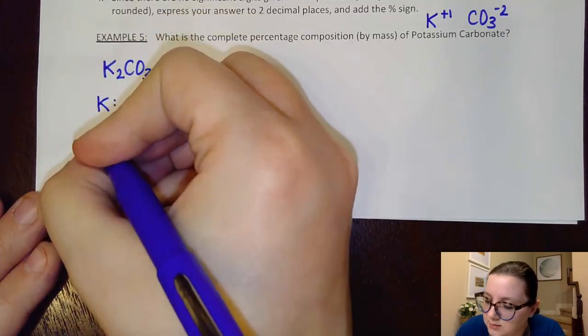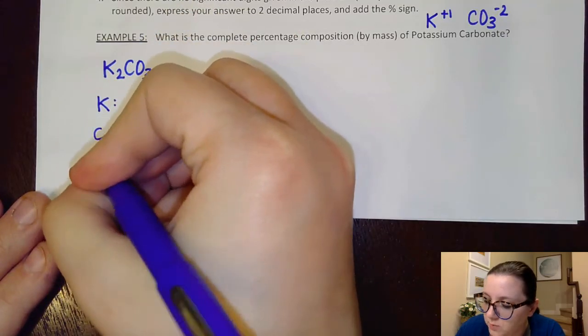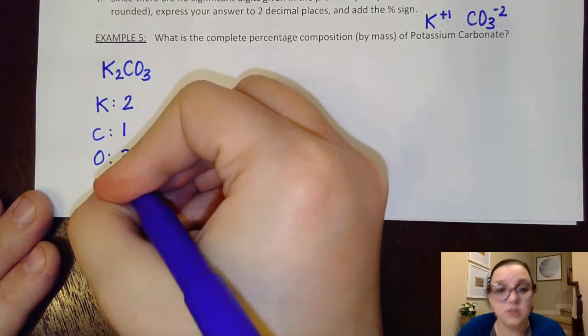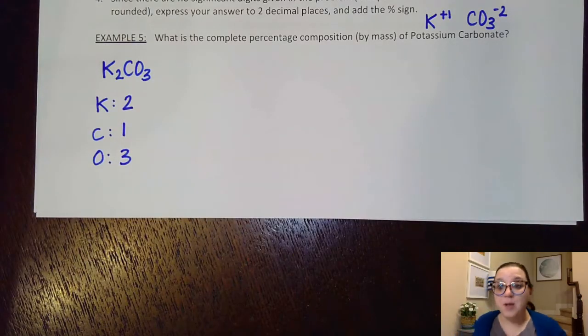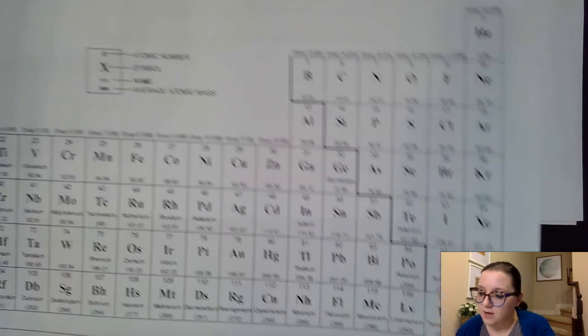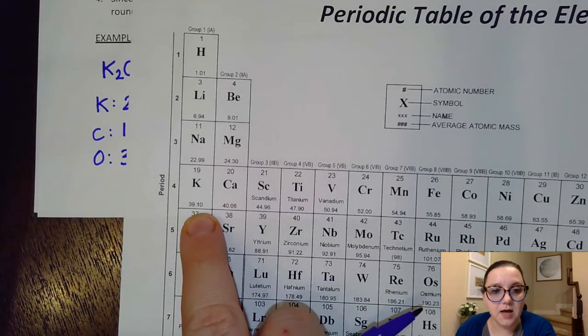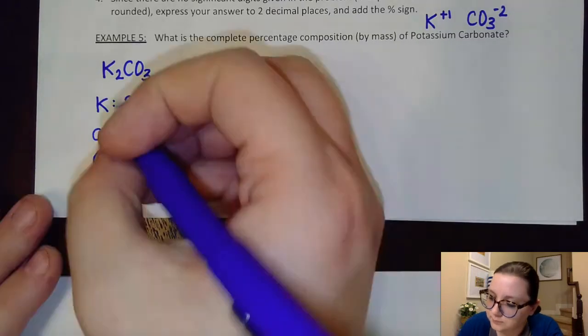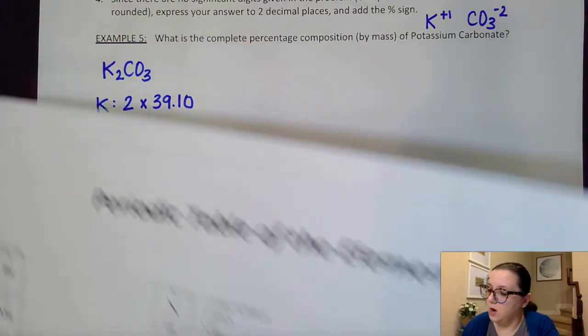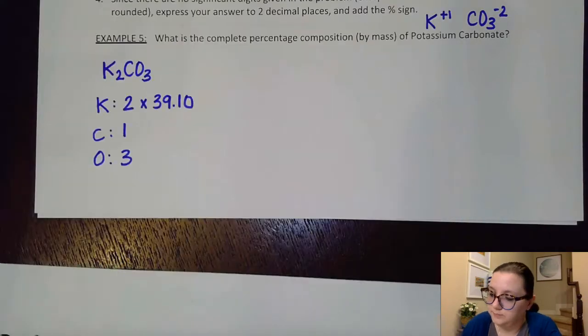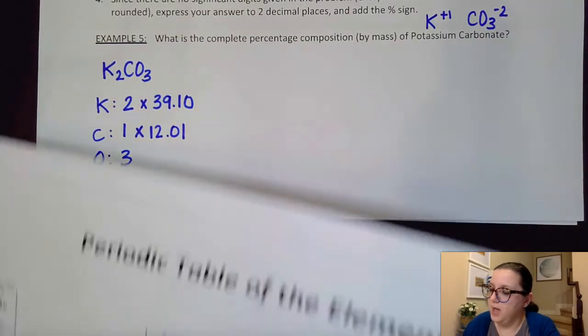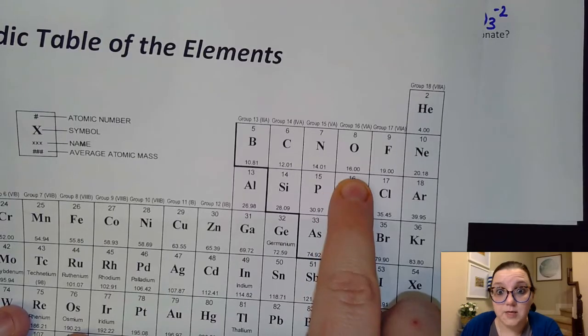So we have potassium, we have carbon, and we have oxygen. We have two potassiums, one carbon, three oxygens. Then I'm going to look at my periodic table and get my molar masses for everything. First, potassium is over here at 39.10. My carbon is 12.01. And then my oxygens would each be 16.